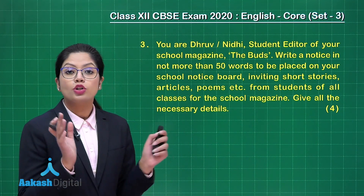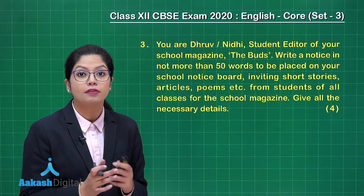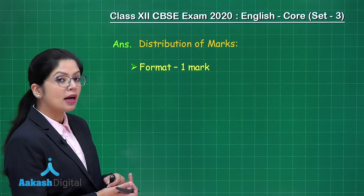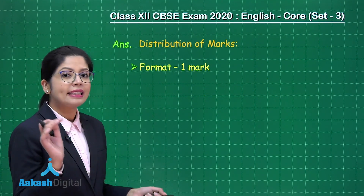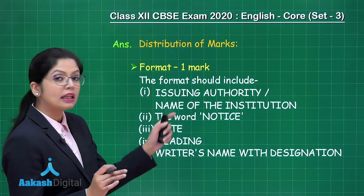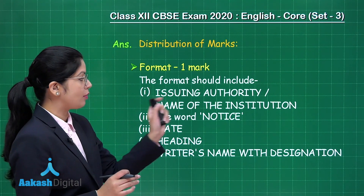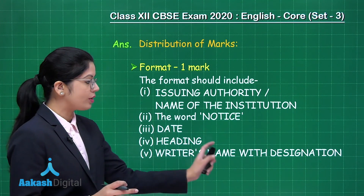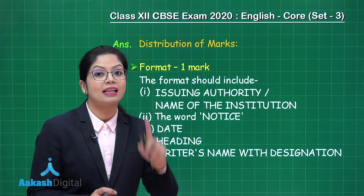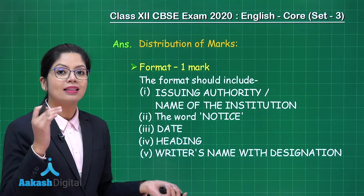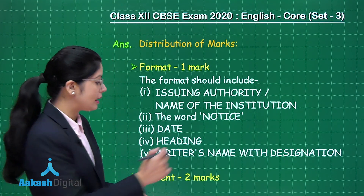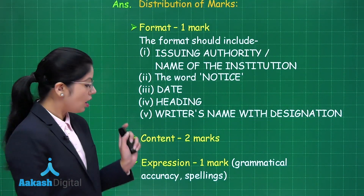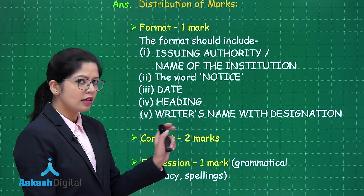Short composition strictly asks you to write in 50 words in the given format. As far as the distribution of marks is concerned, the format carries one mark. In case of a notice, you have to include in your format: issuing authority, name of the institution, the word 'notice,' date, heading, along with the writer's name and designation. The content you write carries two marks, along with expression of writing carrying one mark.